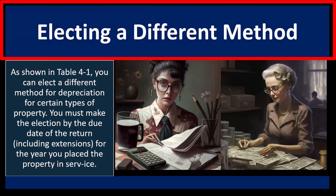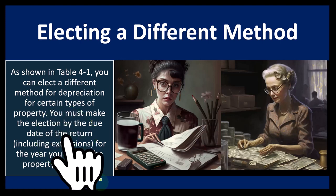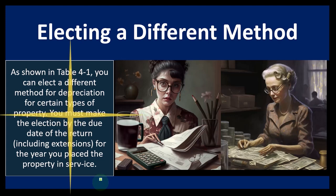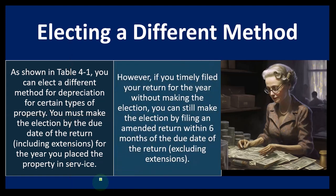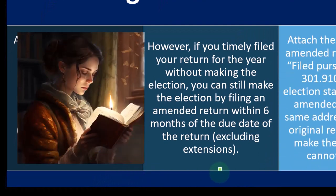So, electing a different method — what if you don't want the default method? As shown in table 4-1, you can elect a different method of depreciation for certain types of property. You must make the election by the due date of the return, including extensions, for the year you place the property in service. However, if you timely filed your return without making the election, you can still make the election by filing an amended return within six months of the due date.